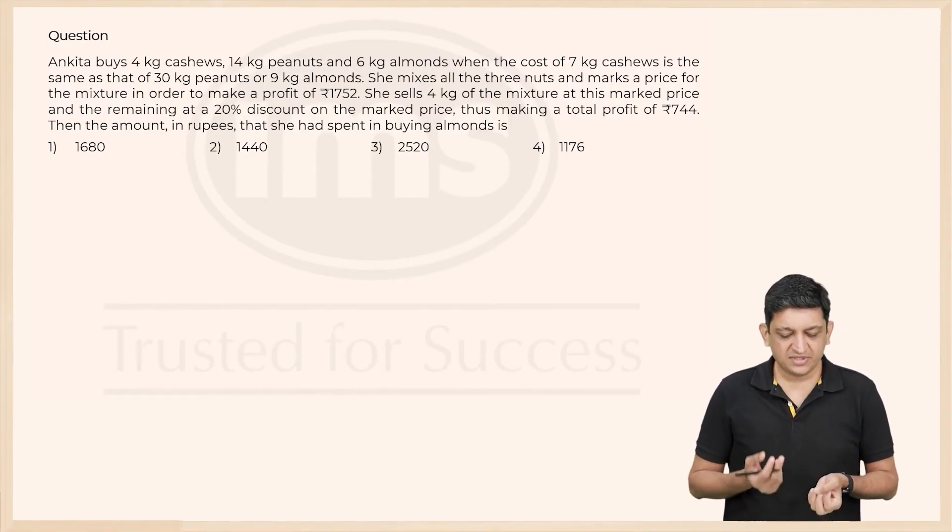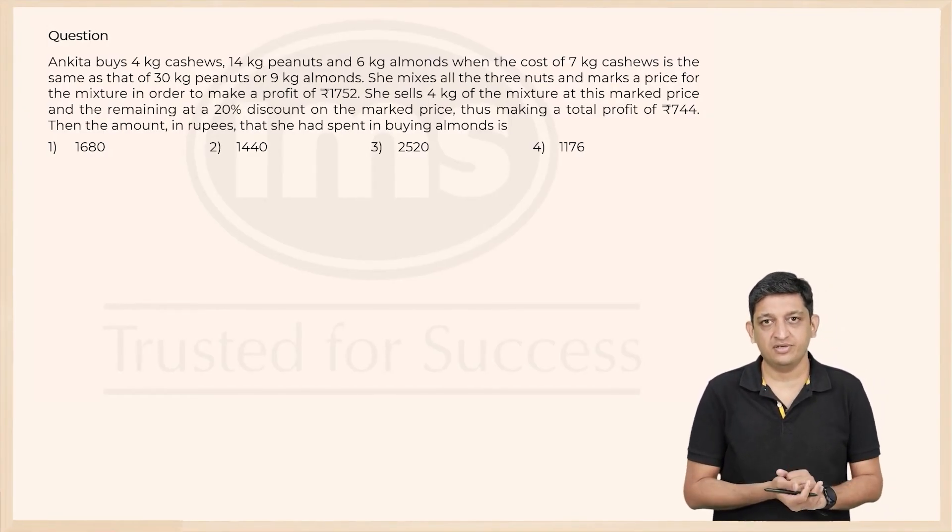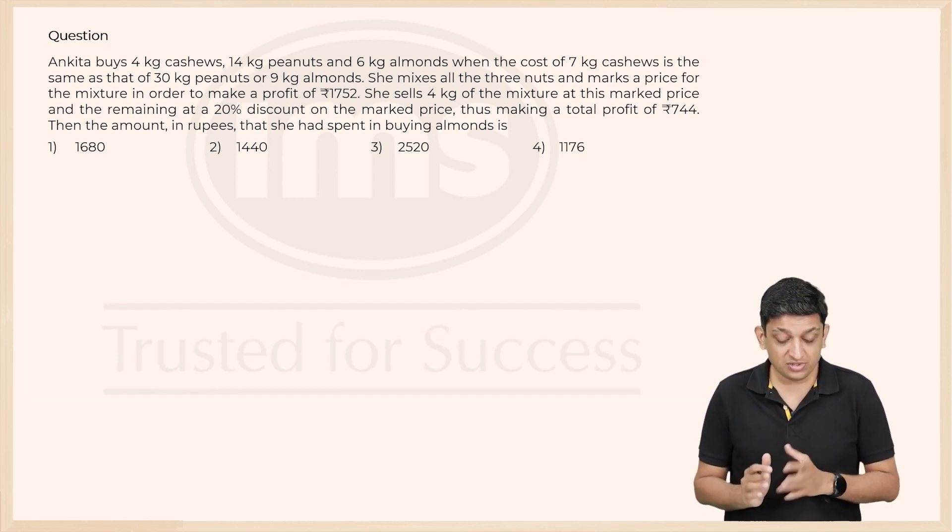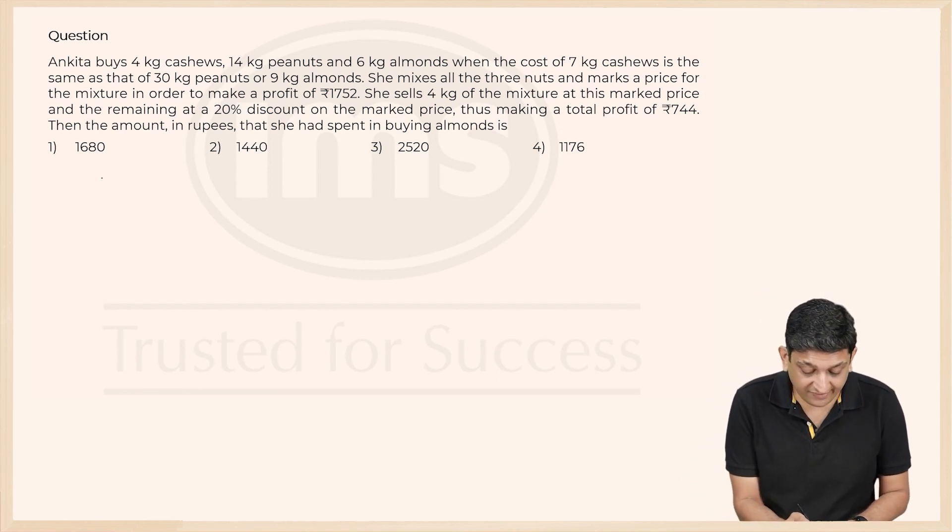Now, this was a rather difficult question and perhaps the most difficult question of this particular slot. So in this case, Ankita buys 4 kg cashews, 14 kg peanuts and 6 kg almonds. So let us write the quantity first. Cashews, peanuts, almonds.